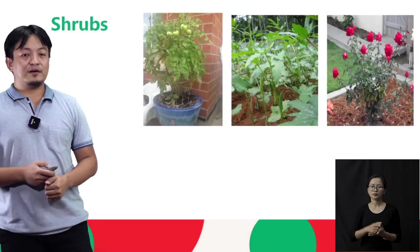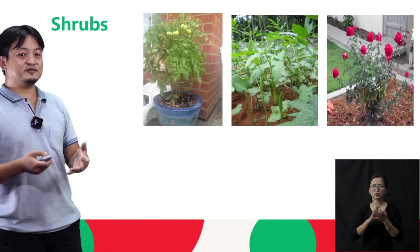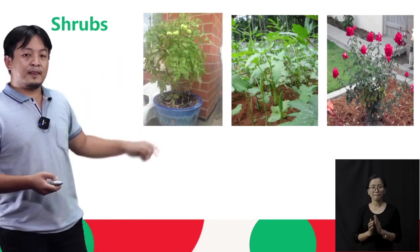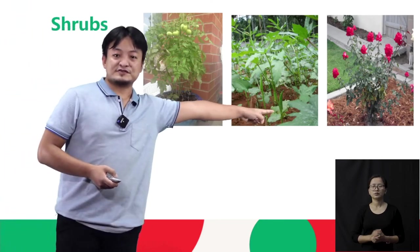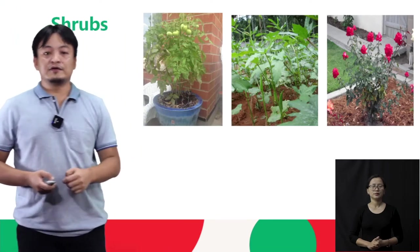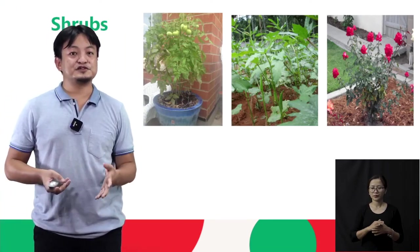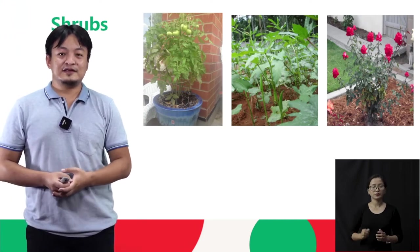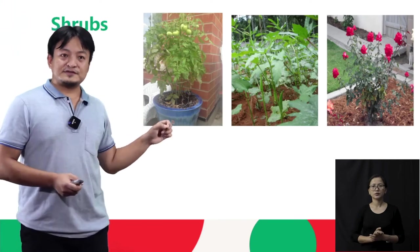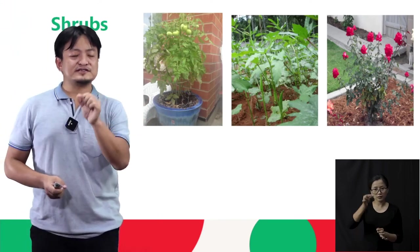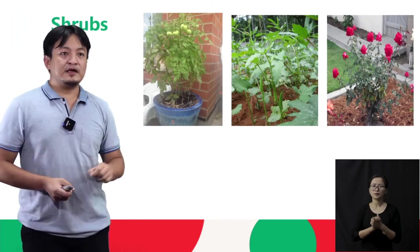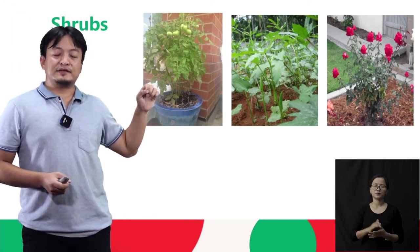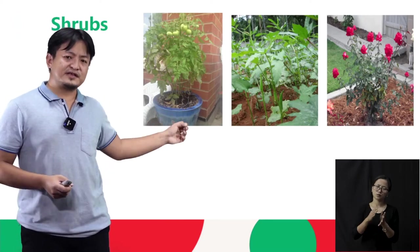Now students, we will learn about shrubs — S-H-R-U-B-S. We can see here a rose plant. So shrubs are plants which are medium-sized. These are not trees; they are medium-sized plants. These shrubs also have a woody stem. They are strong, but they are not as strong as trees. But they are also not very small, and their stems are also not very weak.